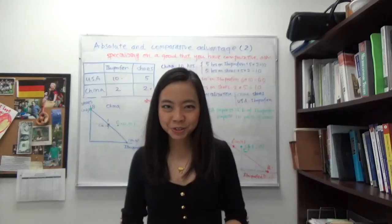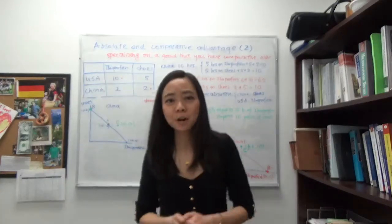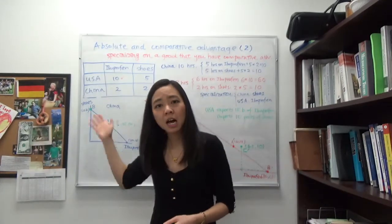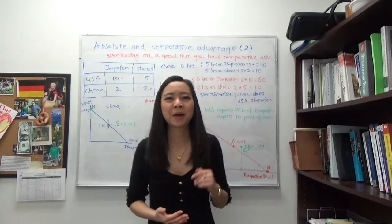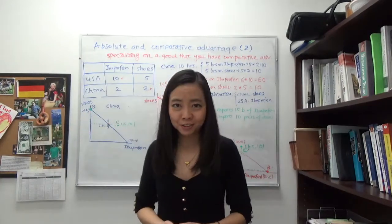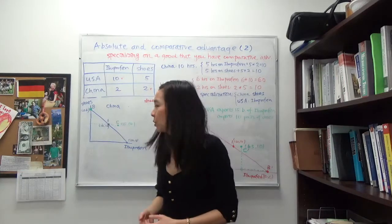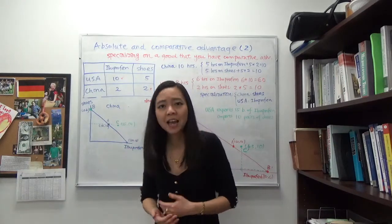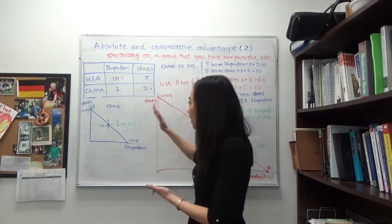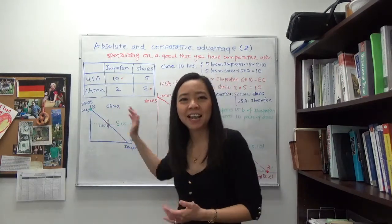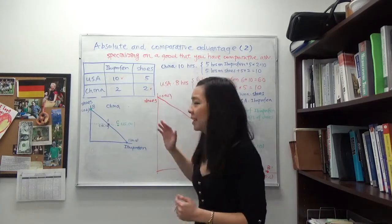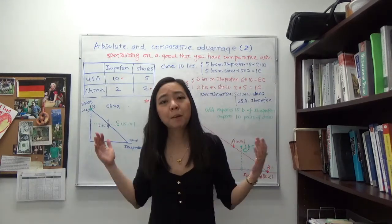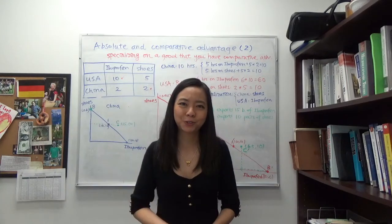Hello everyone, my name is Iris Franz and today we're going to continue to talk about absolute and comparative advantage. In particular, I'm going to show you with a production possibility curve how two countries can specialize on the good that they have a comparative advantage in, and benefit from trade.